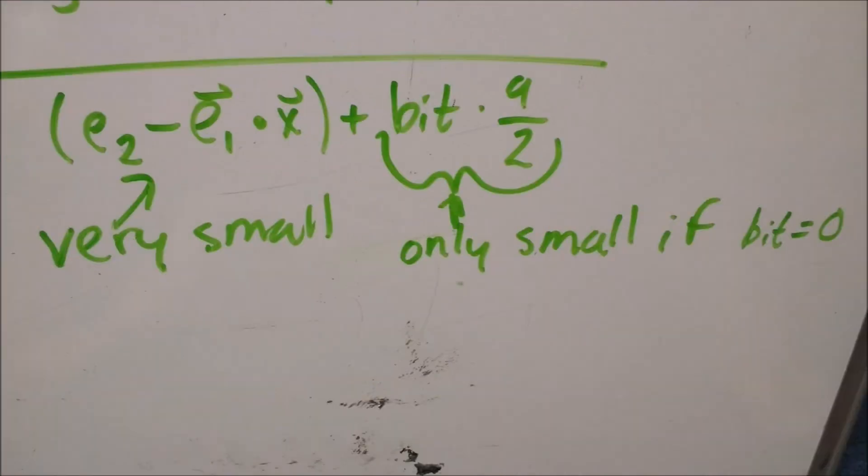The key insight is that the parenthesized term is quite small compared to q over 2. So if the bit is 0, the expression will evaluate to something very close to 0, and Alice will recognize that Bob sent her a 0. But if Bob sent a 1, then the magnitude of the value will be quite far from 0, and Alice will be able to discern that he sent a 1.